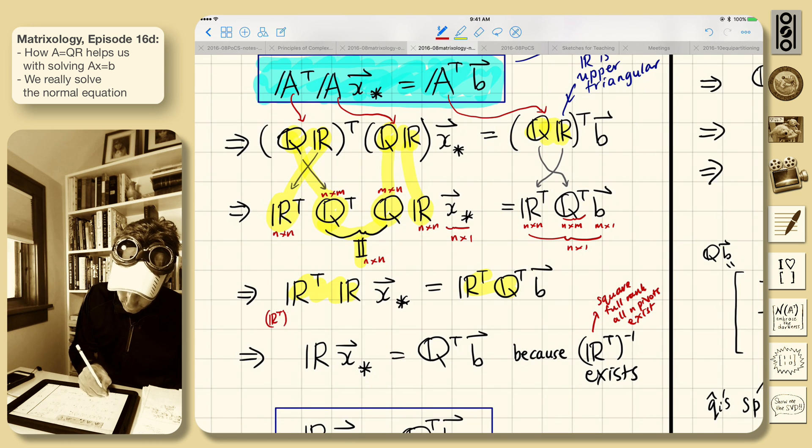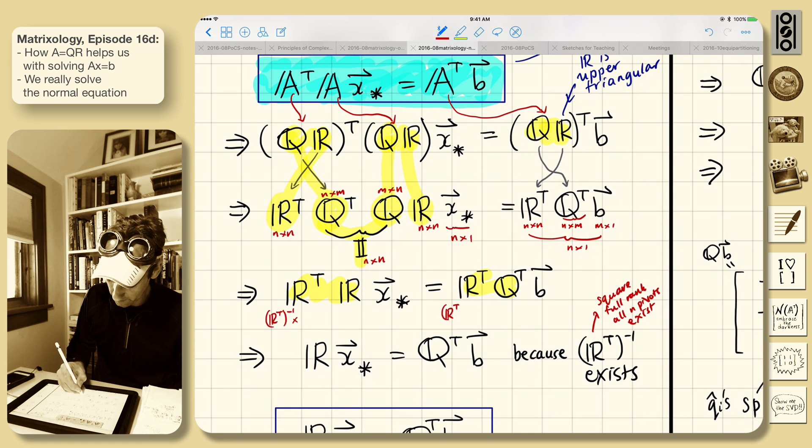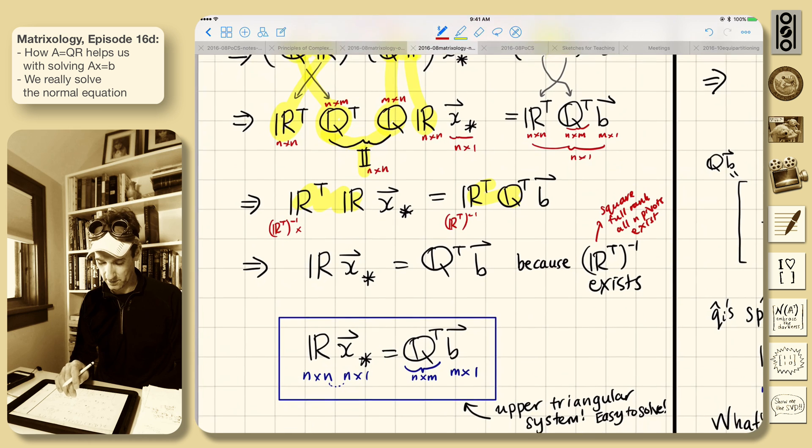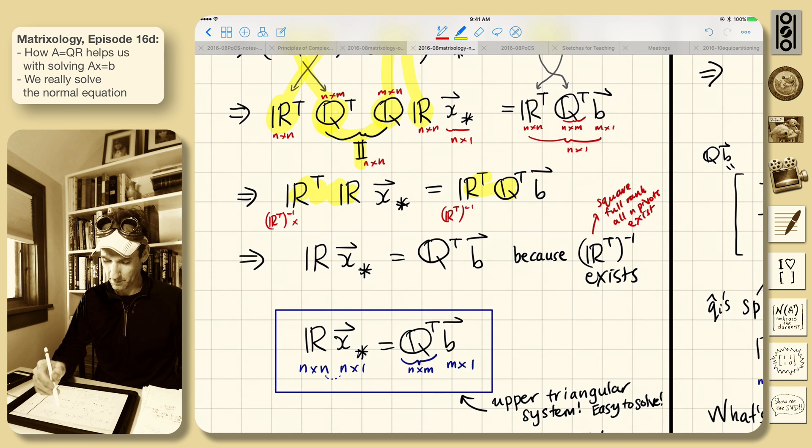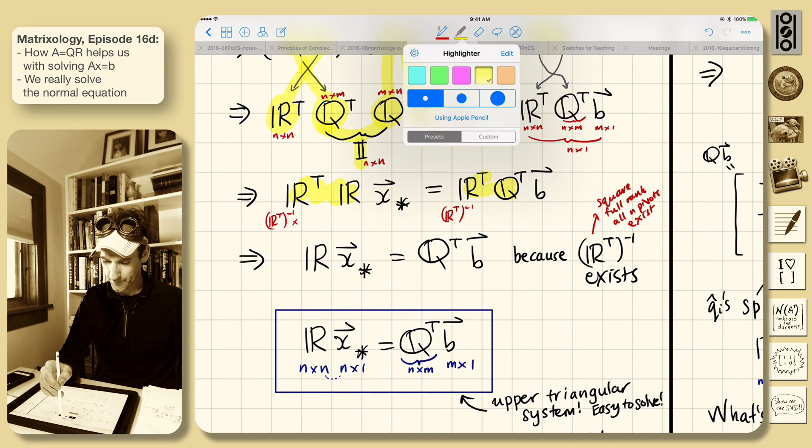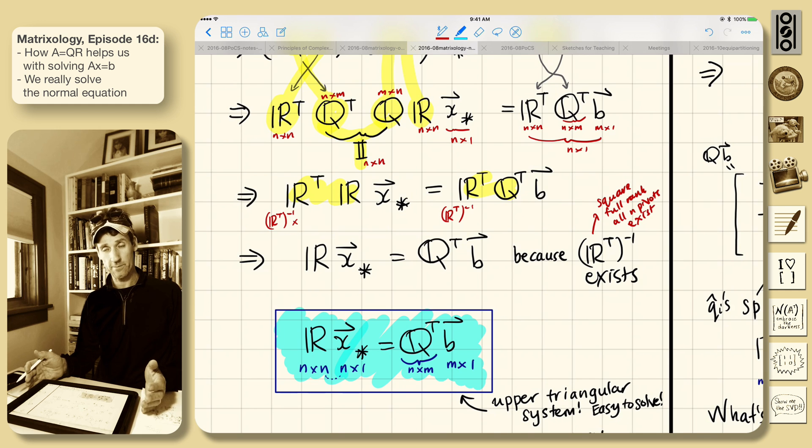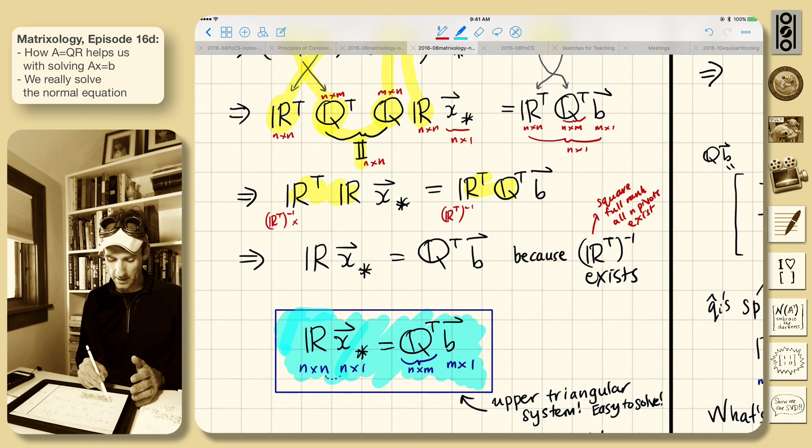So R transpose inverse. We're going to pre-multiply both of them. So it strips it off the front. And we just end up with this result, which we will put into a box here. So the upper triangular matrix R times X is Q transpose B. This is pretty good. So if you have an AX equals B problem and you know A is QR, you can immediately rewrite it in this way.